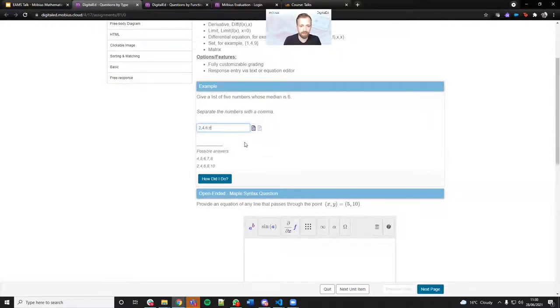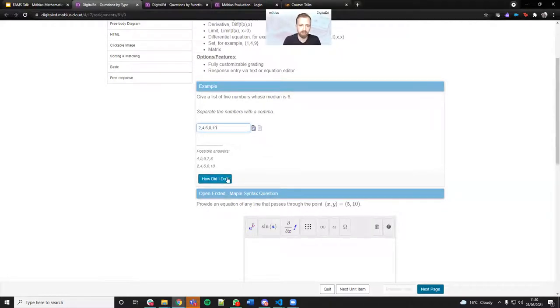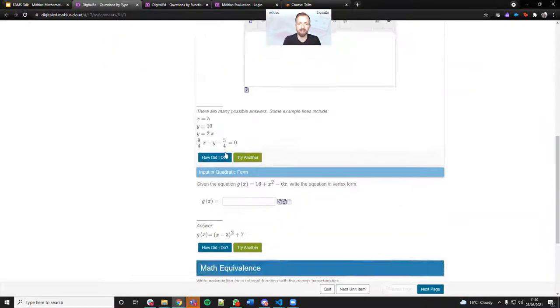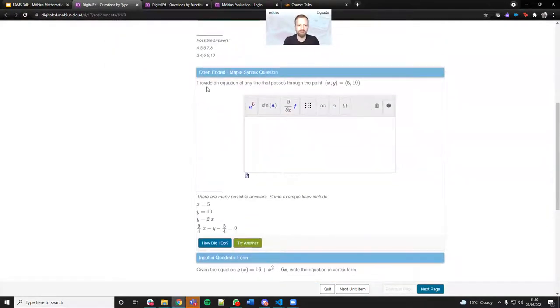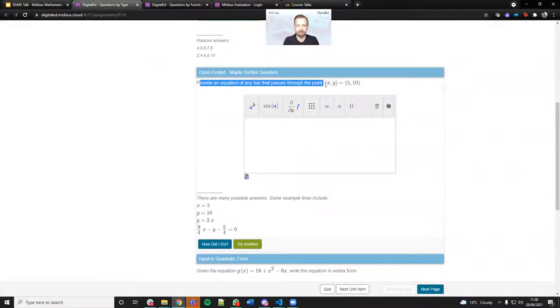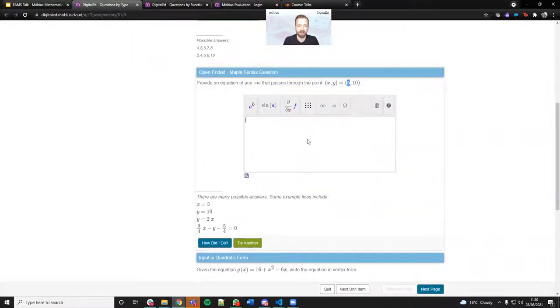Another example here: provide an equation of any line that passes through the point five, ten. We could just have the plot of x equals five.